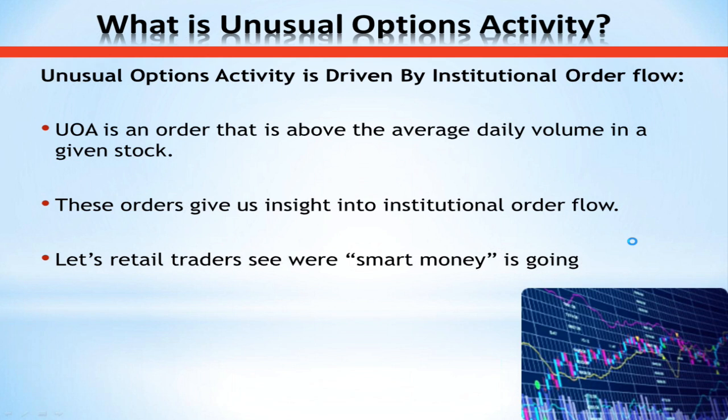So what is unusual options activity? This activity is order flow in the underlying options market that is driven by institutional traders. Simply put, any unusual options activity order is one that has a volume greater than the average daily volume in the given stock. If I know that a stock trades 5,000 equity options contracts on average per day and I see a block of 10,000 out-of-the-money calls being bought, I know right away that's unusual options activity.